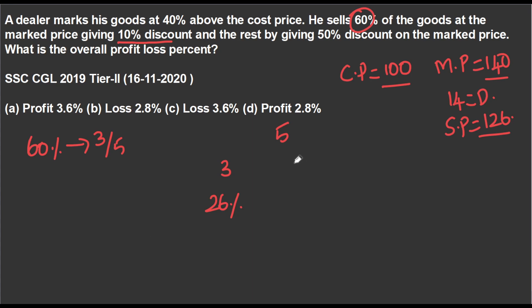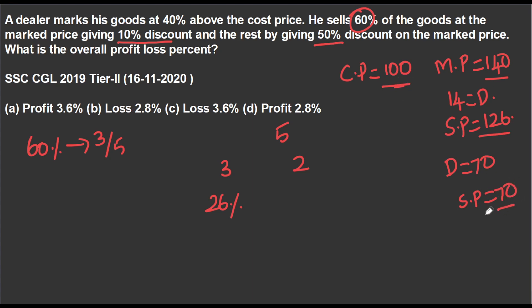The remaining 2 goods have a 50% discount. So 50% discount on market price 100x gives us 50. So in this case, selling price is 50 out of 100 — that's a 30% loss. So the overall percentage needs to be fixed.